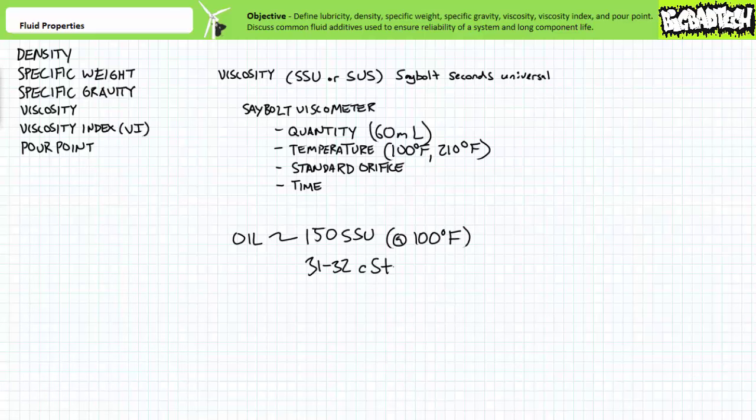By the way, another common unit of viscosity, especially for scientific purposes rather than industrial classification, is the centistoke, sometimes abbreviated CST, where an oil with a viscosity of around 150 SSU also has a viscosity of roughly 31 to 32 centistokes. Be careful of manufacturer data sheets specifying viscosity in units of centistokes rather than units of Saybolt Seconds Universal.